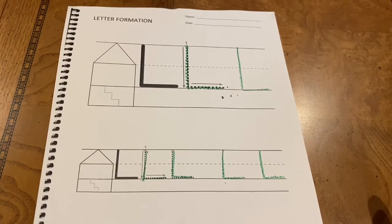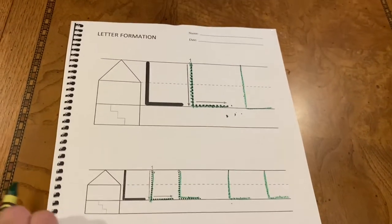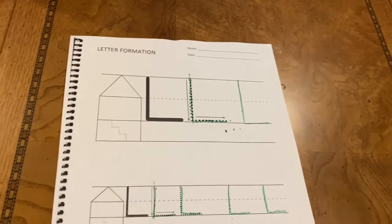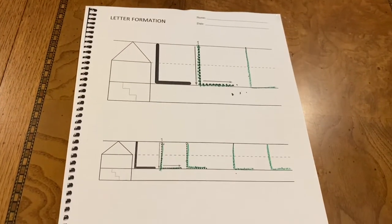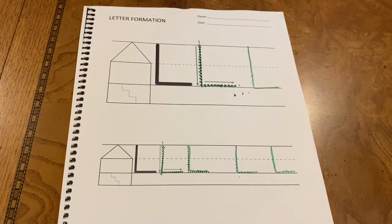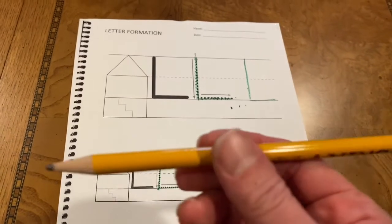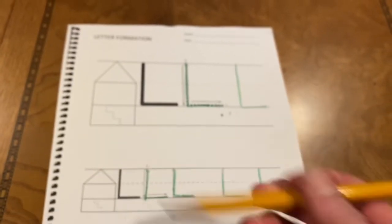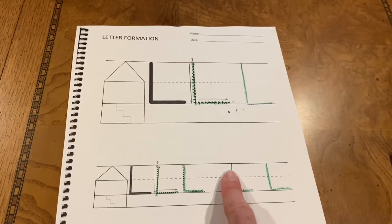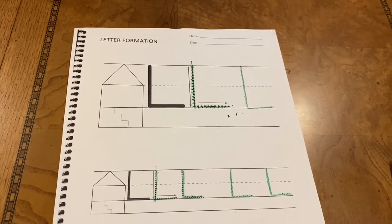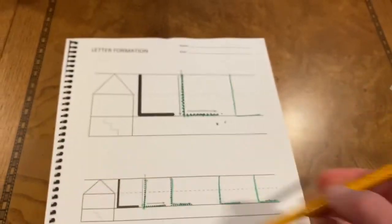When you are done with page 25, you're going to turn over and do page 26 because it's a short week this week. So when you turn over to page 26, you're going to be using a pencil to do that work. You're doing the crayon on page 25, a pencil on page 26.